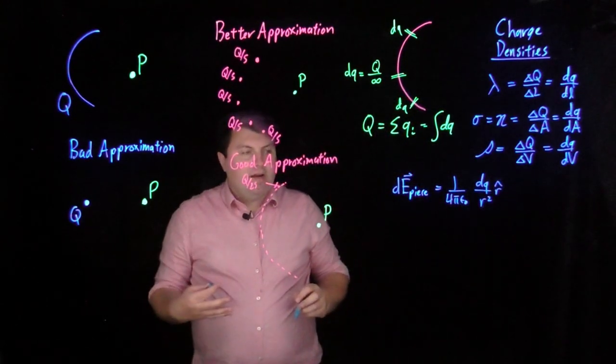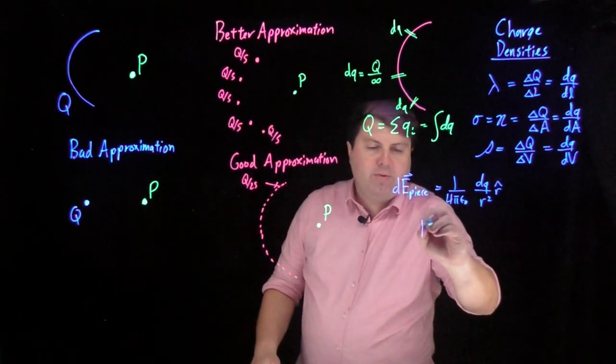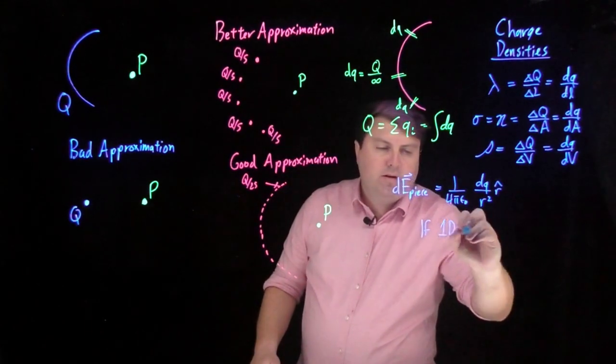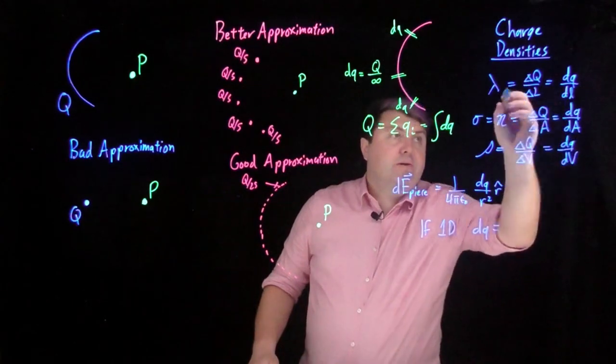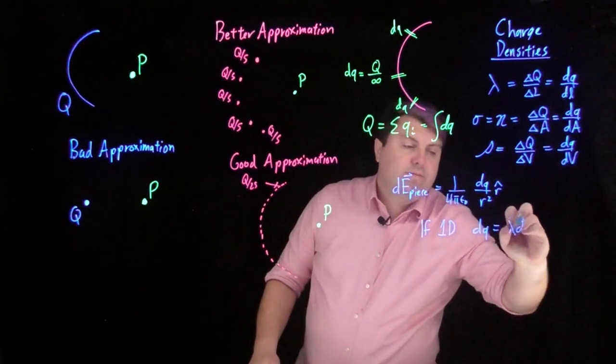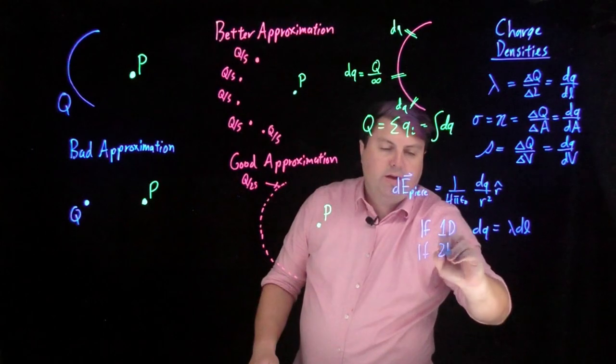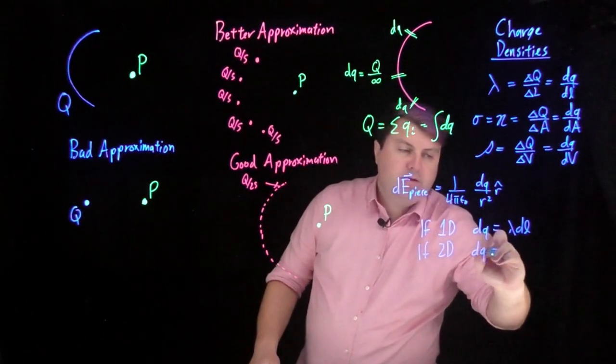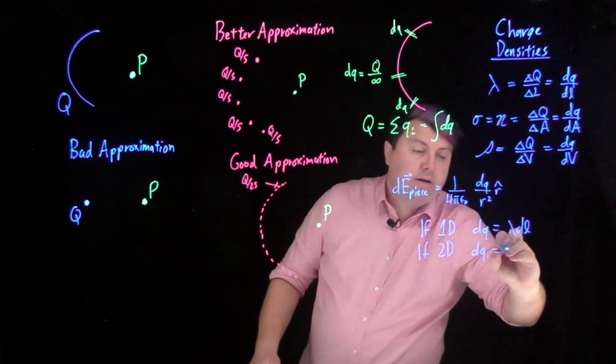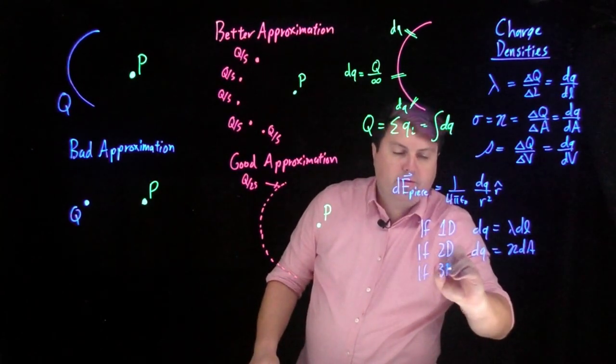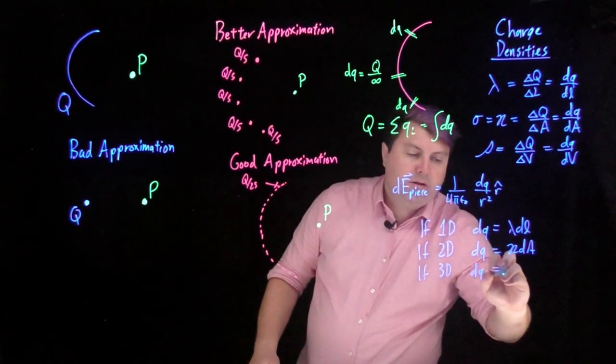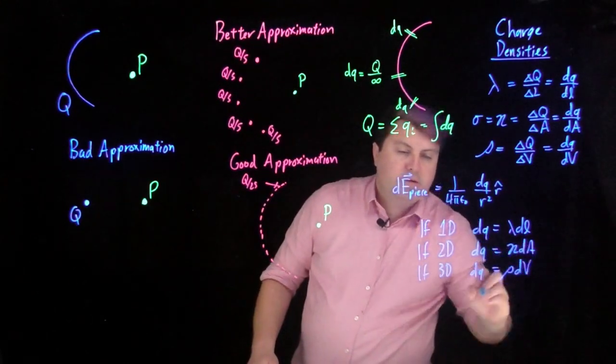And then depending on our piece, so if we had it be 1d, we can solve for dq. dq would then be lambda dl. If we're 2d, dq is going to be eta dA. If we're 3d, dq is going to be rho dV.